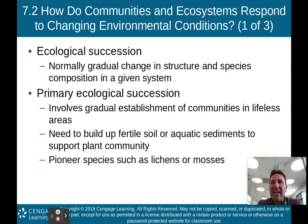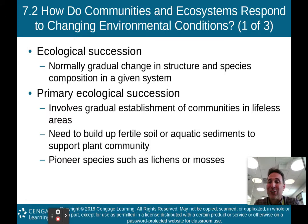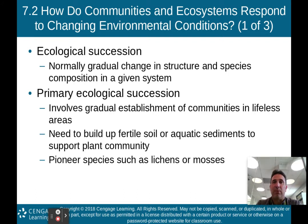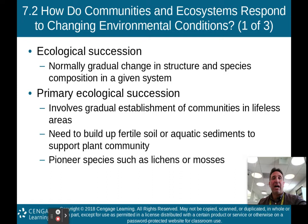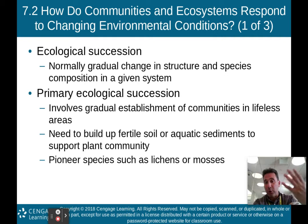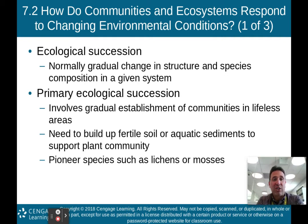How do communities and ecosystems respond to changing environmental conditions? That's what ecological succession is. Ecological succession is the normally gradual change in structure and species composition in a given system. There are two ecological successions you're going to have to know about: primary and secondary ecological succession.